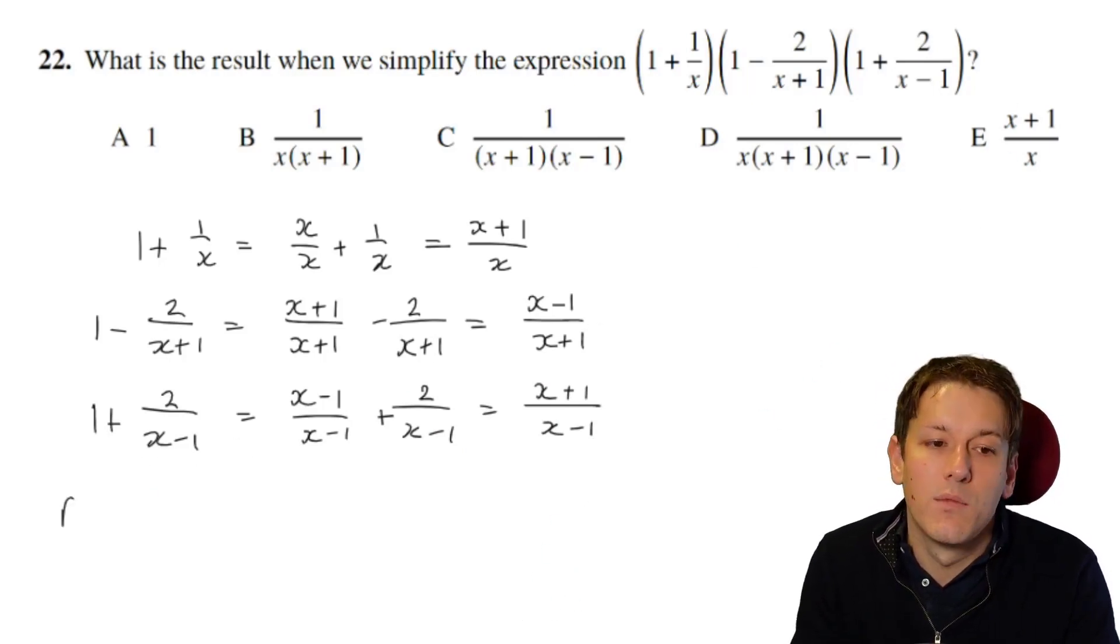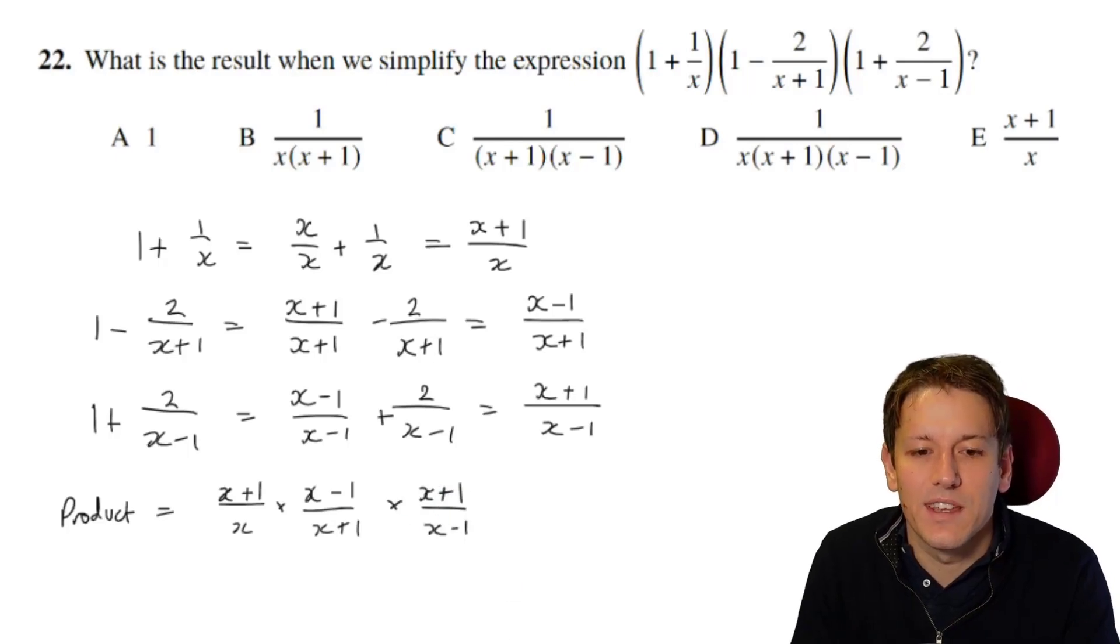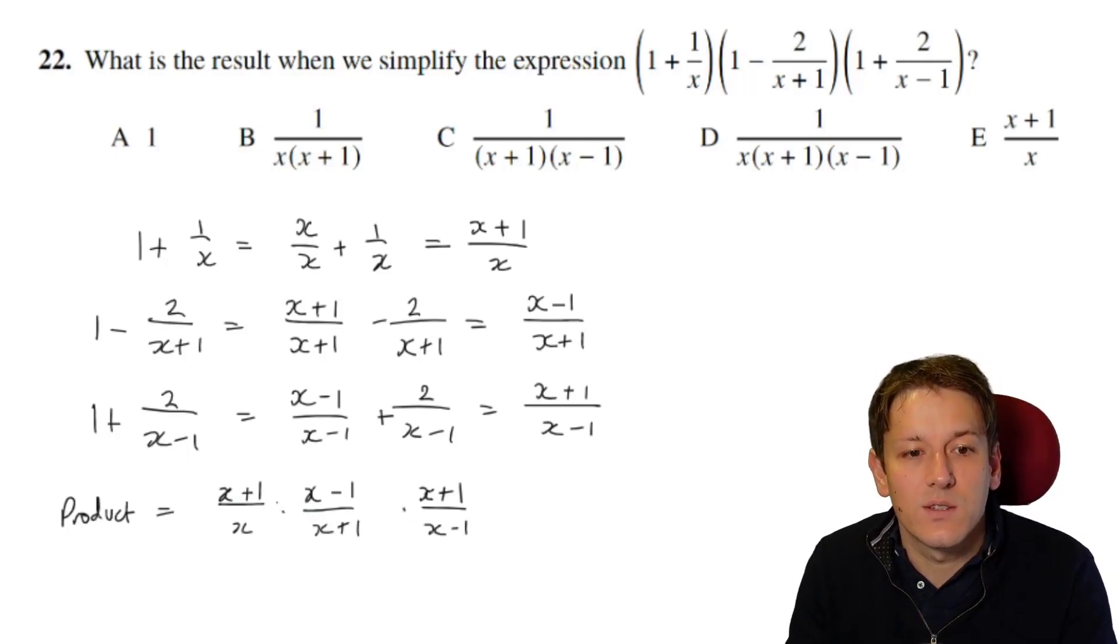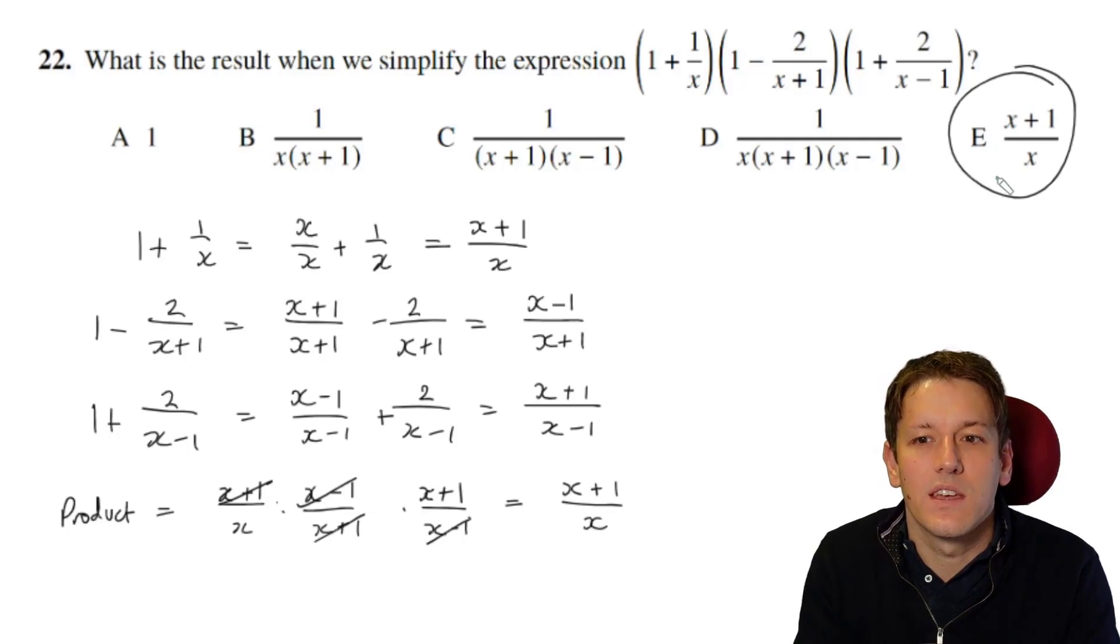So when I multiply all these together, the product is going to be x plus 1 over x multiplied by x minus 1 over x plus 1 multiplied by x plus 1 over x minus 1. Now you can see things cancel here. So I've got an x plus 1 canceling with an x plus 1, I've got an x minus 1 canceling with an x minus 1, and I'm left here just with x plus 1 over x. And no more rearrangement is needed, because that's one of the answers here. And the answer is E.